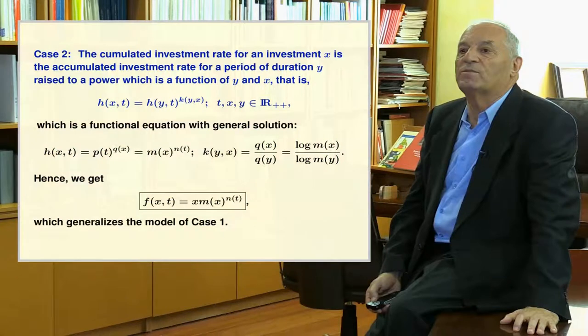Case 2: the accumulated tax rate for an investment x is the accumulated tax rate for a period of duration y raised to a power which is a function of y and x, as given by the formula at the top of the slide. This is a functional equation with general solution as given. Obtaining f from the h function, we get the solution in the box formula, which clearly generalizes the model obtained in Case 1.